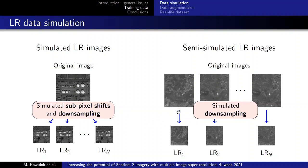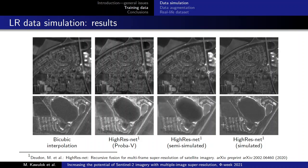This is an example of the results. These two models — in particular the HighResNet network — were trained with different training data. We can see that when the model is trained with the simulated data, there are some severe grid-like artifacts that do not appear in the semi-simulated scenario.